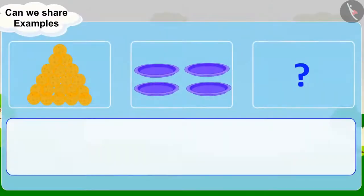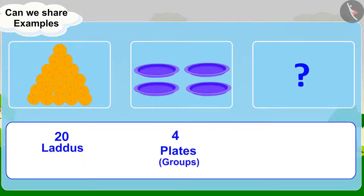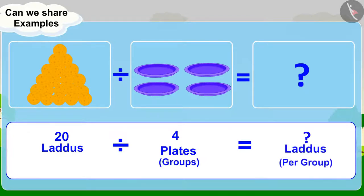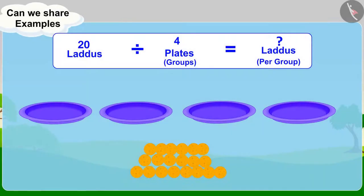We can write this question this way: 4 equal groups of 20 laddoos equals how many laddoos per group? First, we will put 1 laddoo in each plate.